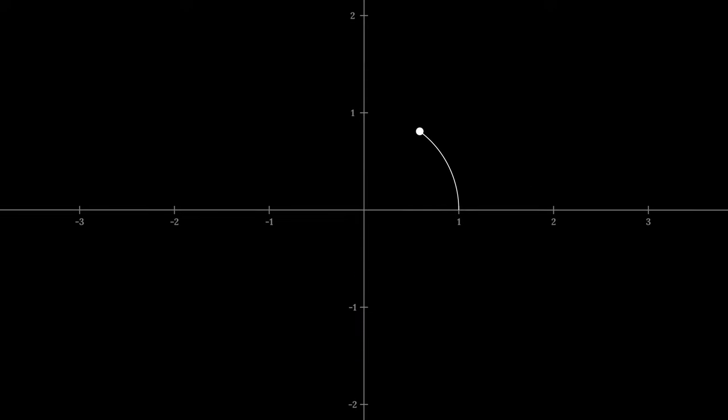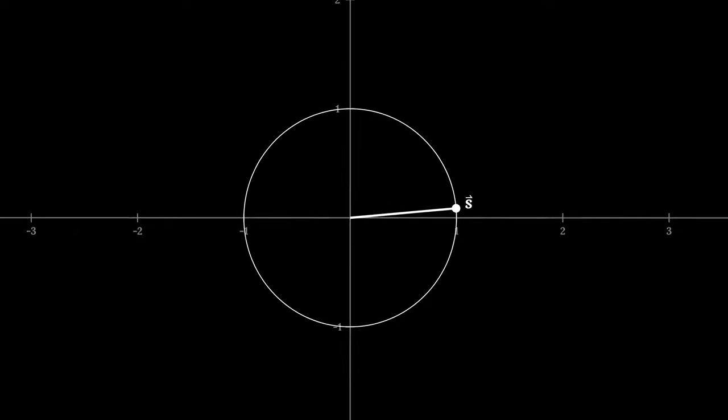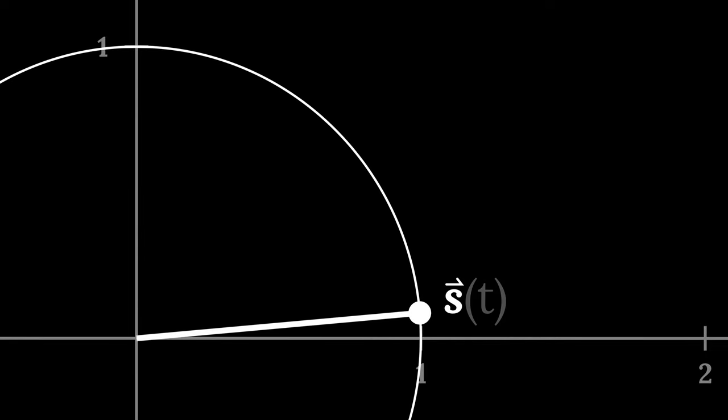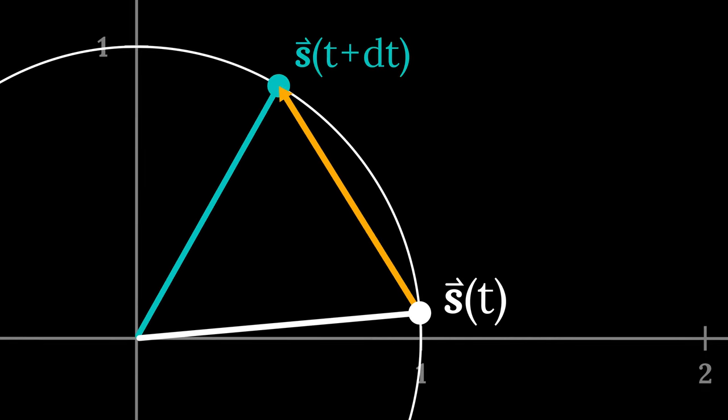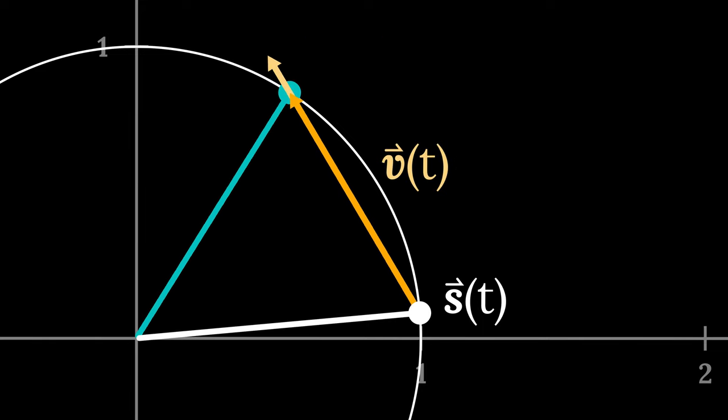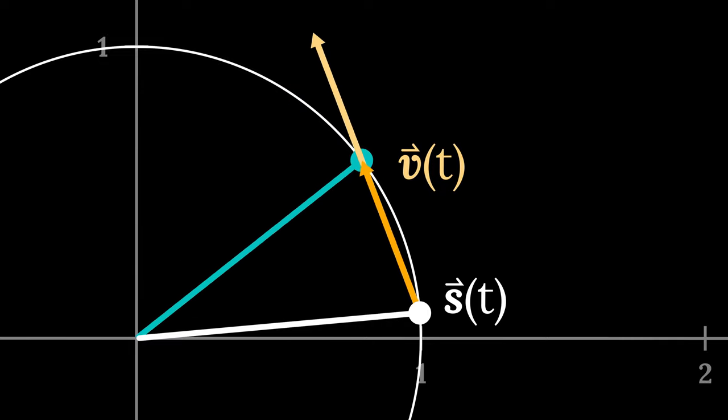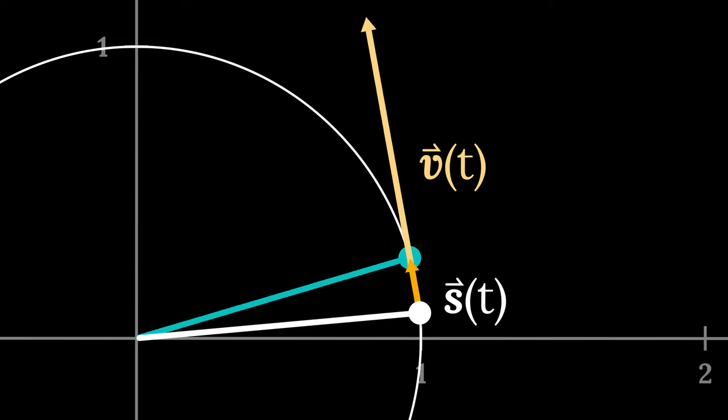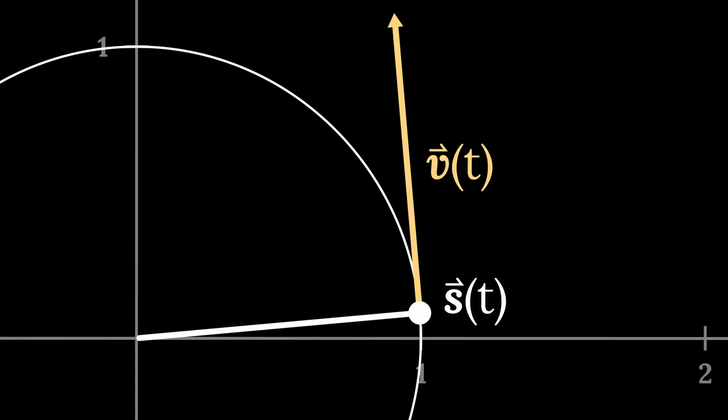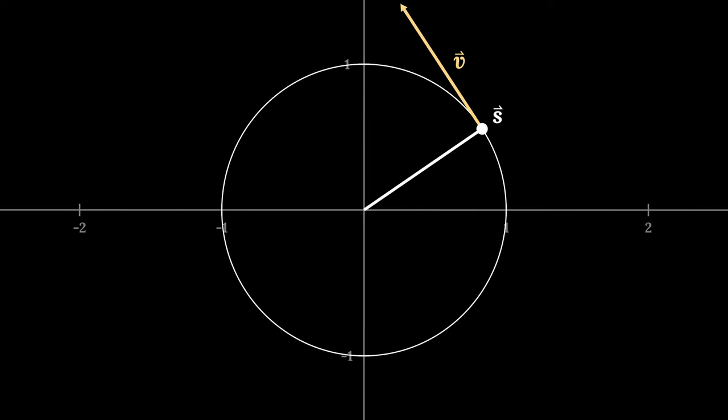Imagine a ball moving along a circle of radius 1 at constant speed. Let's draw its position from the origin as a vector s. We can find the velocity v just as we found the derivative. Measure how far the ball travels in a short time dt. Since speed is distance over time, we have to scale this vector by 1 over dt. As dt gets smaller, the vector gets closer to being tangent to the circle, just as a derivative is tangent to its function.